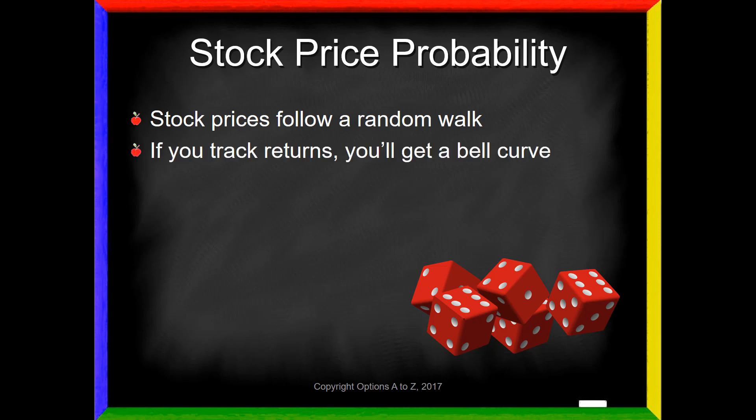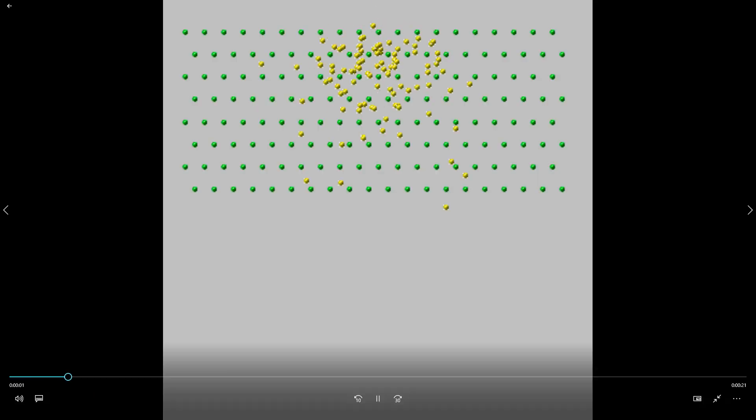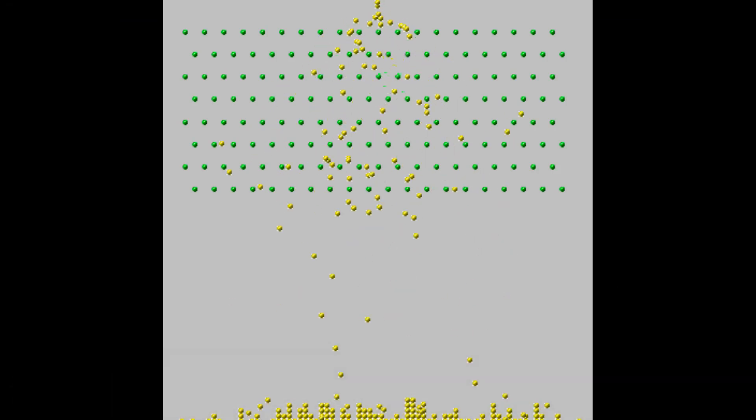So at a bare minimum, it's just a great way to figure out which strategies and which strikes are best for you. The reason we can do this is that it's based on stock price probability and that stock prices follow a random walk. This just means that if you were to track stock returns over a long period of time, you're going to get a bell curve. So what do I mean by returns? Well, if the stock is trading at 100 today and it closes at 101, that's a 1% return.